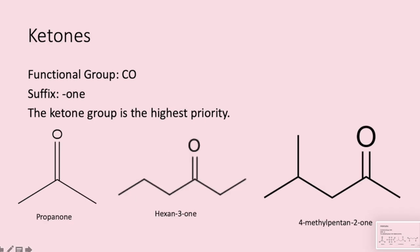Ketones contain the functional group CO, meaning there is a carbon double bond O in the middle of a compound. All ketones have the suffix '-one'. The ketone group is the highest priority, meaning all compounds with a ketone group should end in '-one'. In the first example on the far left there are three carbons. The ketone group is in the middle — with three carbons it can't go anywhere else without becoming an aldehyde — so we call it propanone.